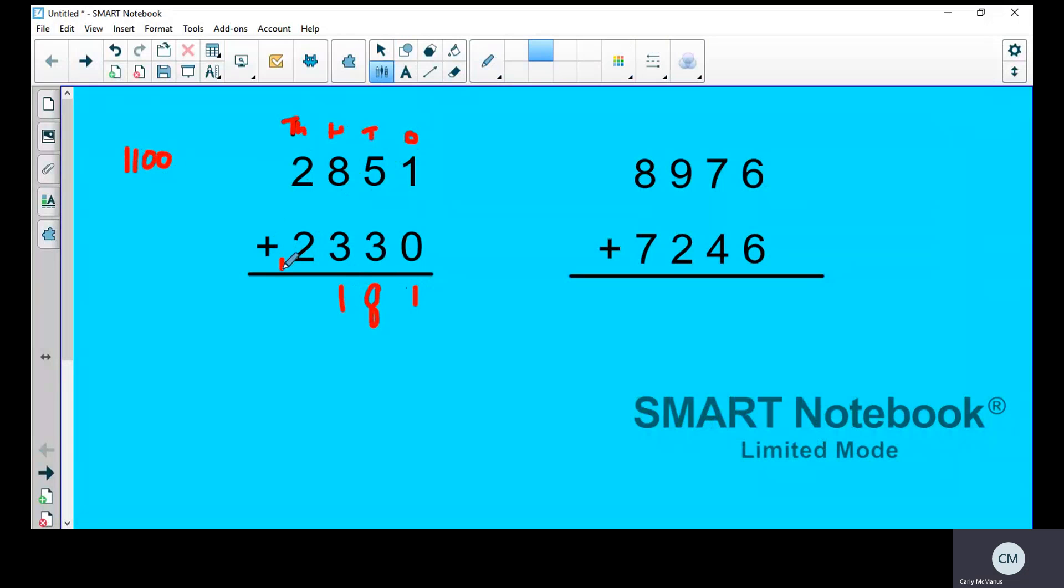So you put that one in the hundreds column, and that one is actually a thousands number, so you have to put that in the thousands column. Then you've got two add two which is four, add the one which is five. So we've had to rename here, haven't we, because that equals eleven hundred. So we kept the one hundred and then renamed the other hundreds into thousands.